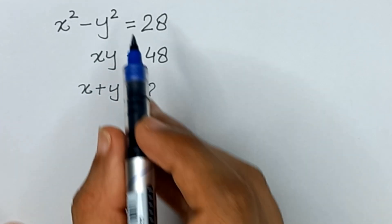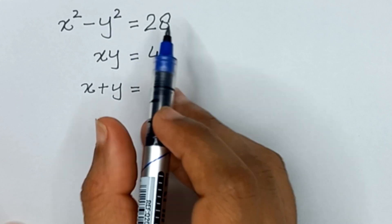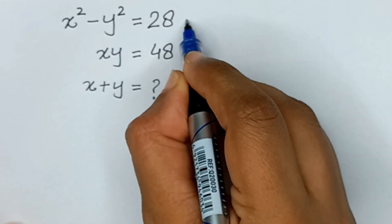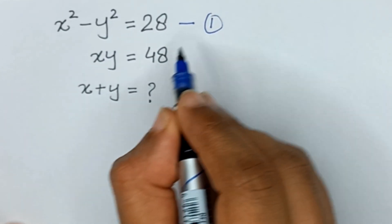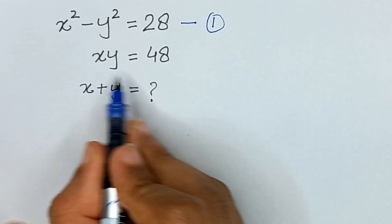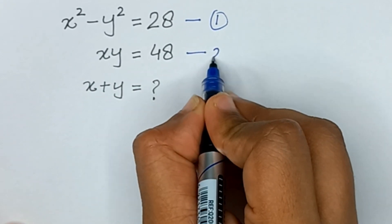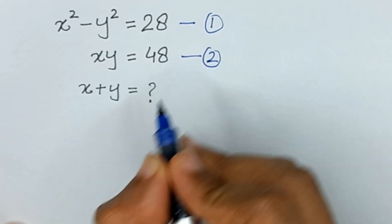We have x squared minus y squared equals 28 — we'll name it equation number one. The second equation is xy equals 48 — we'll name it equation number two.